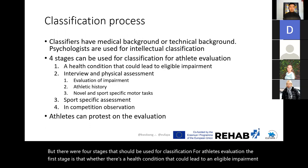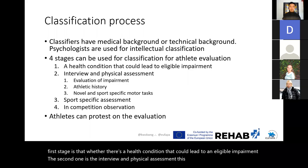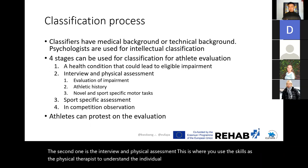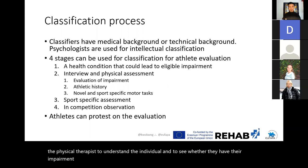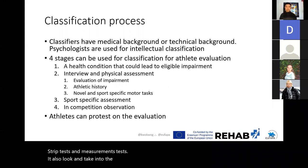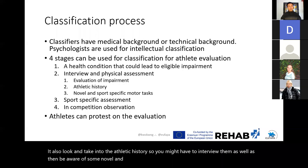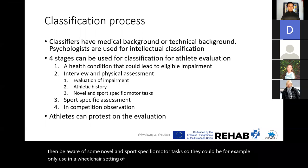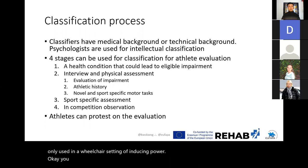The second is the interview and physical assessment, where you use skills as a physical therapist to understand the individual and see whether their impairment is at the appropriate class level. You would evaluate impairments through range of motion tests, strength tests, and measurements, take an athletic history interview, and also be aware of novel and sport-specific motor tasks — for example, only used in a wheelchair setting for inducing power.